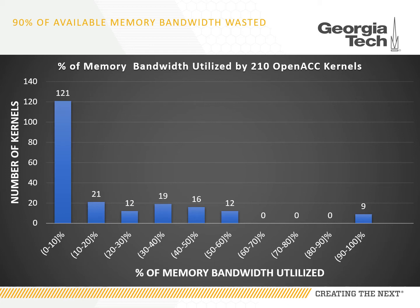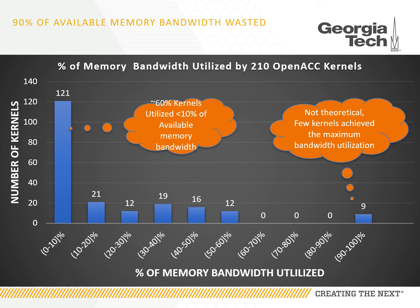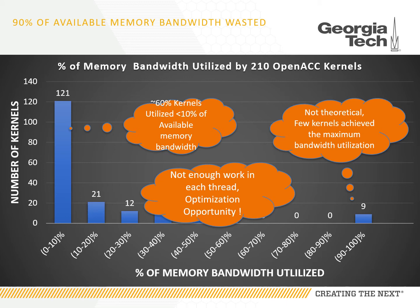This chart shows the frequency histogram of the memory bandwidth utilized by 210 individual OpenACC kernels. For example, 9 kernels were able to achieve 90-100% of the available memory bandwidth, but 121 kernels — 60% of the total — utilized less than 10% of the available memory bandwidth. This is clearly an issue; it seems like there is not enough work in each thread, and this is an optimization opportunity.